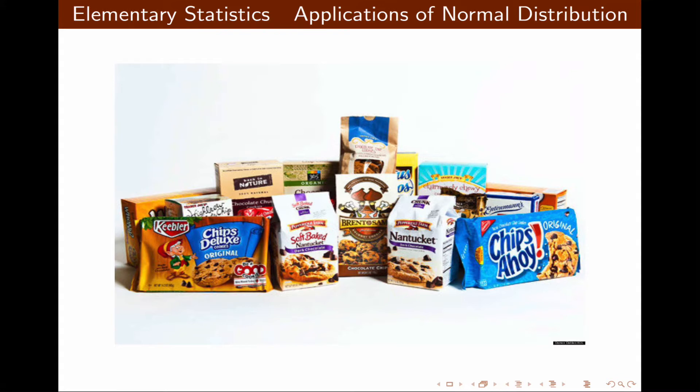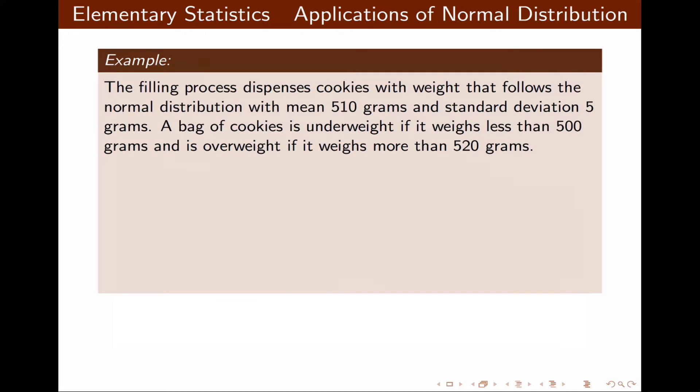Think about a bag of cookies. The filling process of dispensing cookies with a weight that follows a normal distribution has a mean of 510 grams and a standard deviation of 5 grams. A bag of cookies is considered underweight if it weighs less than 500 grams and overweight if it weighs more than 520 grams.